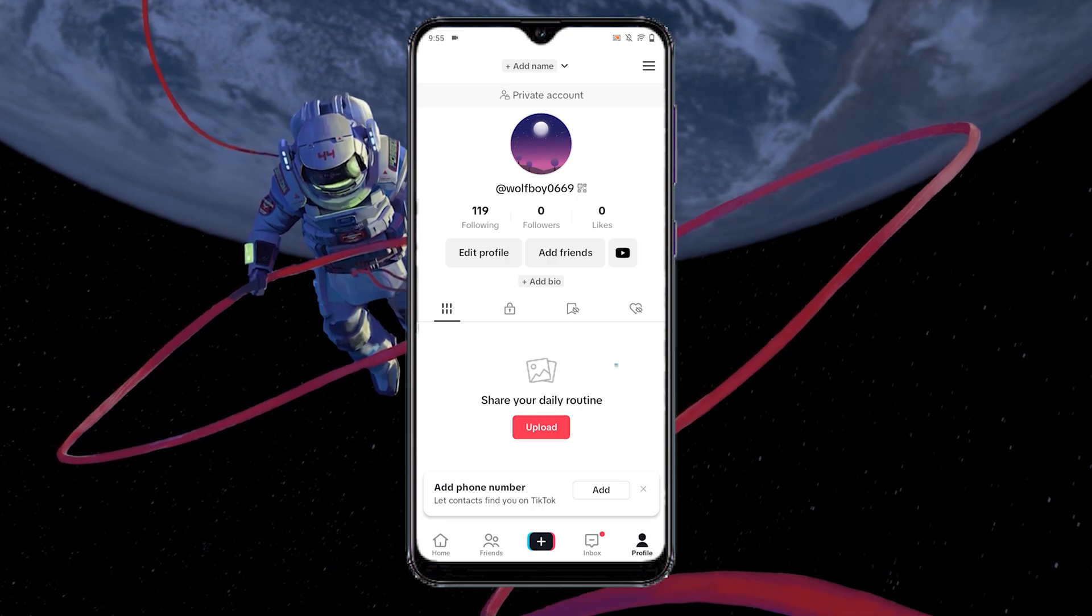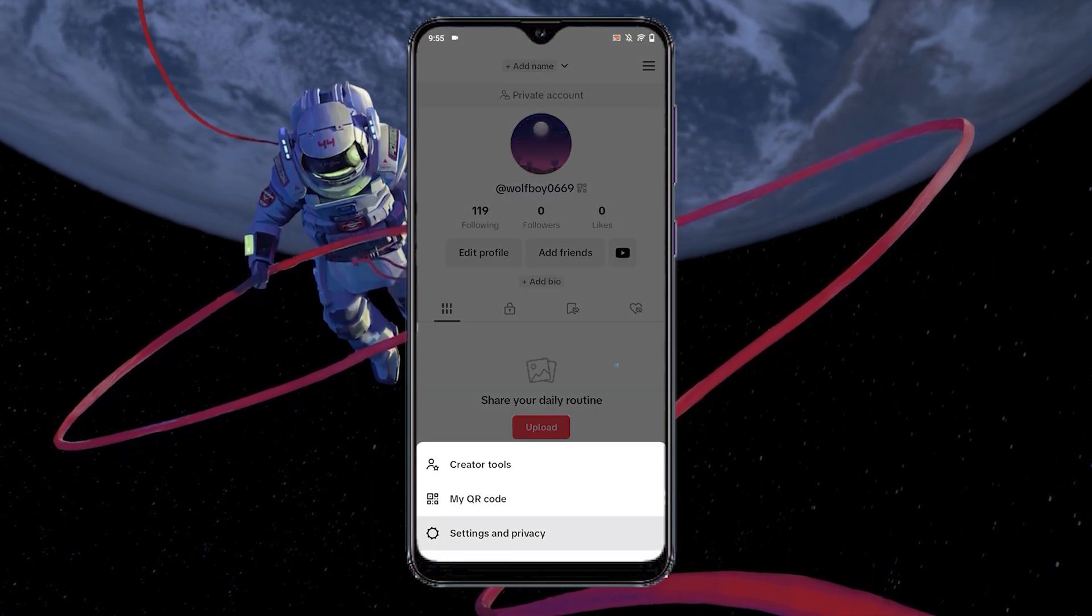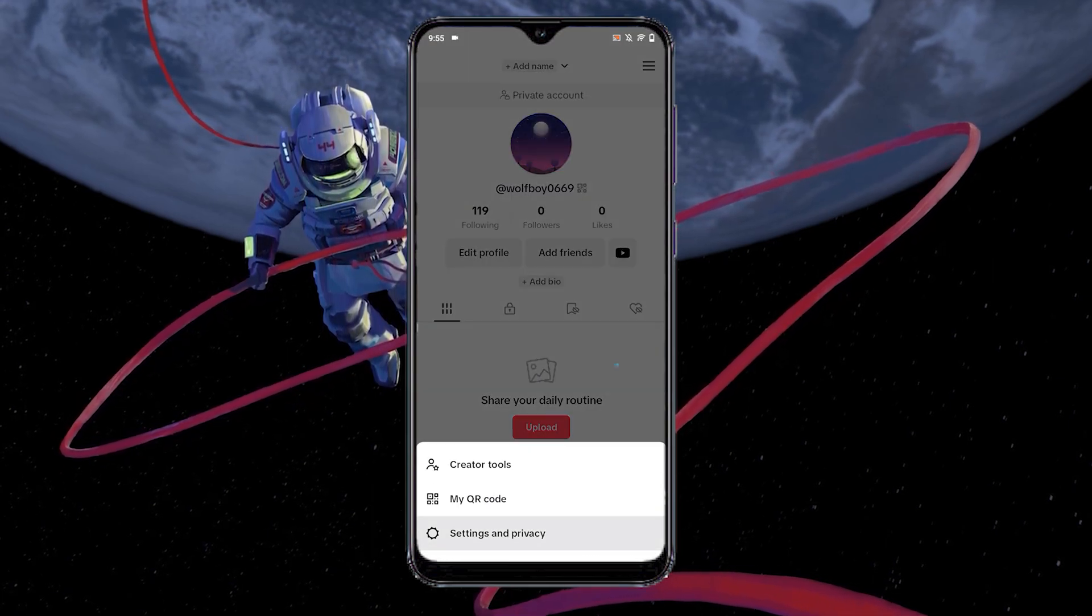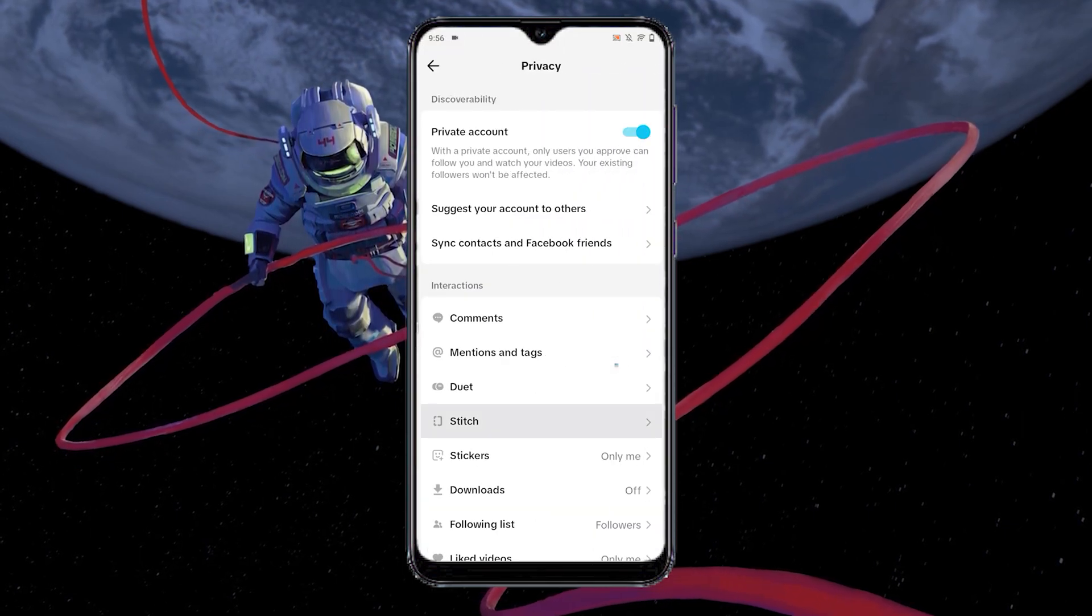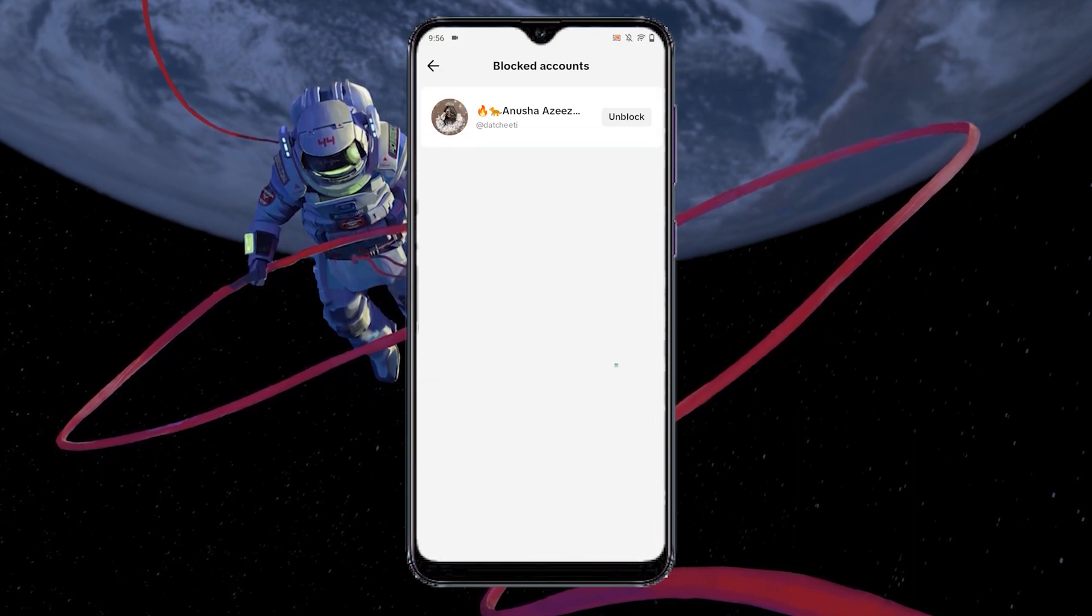Next, tap on the three horizontal lines in the top right corner. Next, tap on settings and privacy and tap on privacy again. Scroll down and tap on blocked accounts.